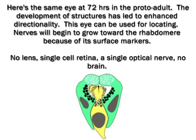Here's the same eye at 72 hours in the proto-adult. The development of structures has led to enhanced directionality — this eye can be used for locating. Nerves will begin to grow toward the rhabdomere because of its surface markers. No lens, single cell retina, a single optic nerve, no brain.